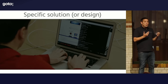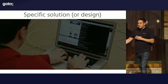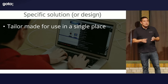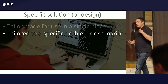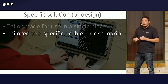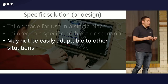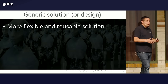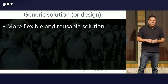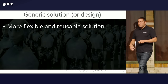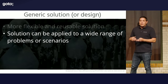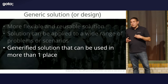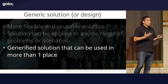Now that we somewhat know what design is, let's ask when is something specific or generic. A specific solution is tailor-made for use in a single place — it's a one-off, tailored to a specific problem or scenario, and may not be easily adaptable to other situations. Whereas if you go generic, it's typically flexible and reusable. We love it as developers — let's make it flexible and reusable because we may need it in the future. You can apply it to a wide range of problems. A Swiss pocket knife.